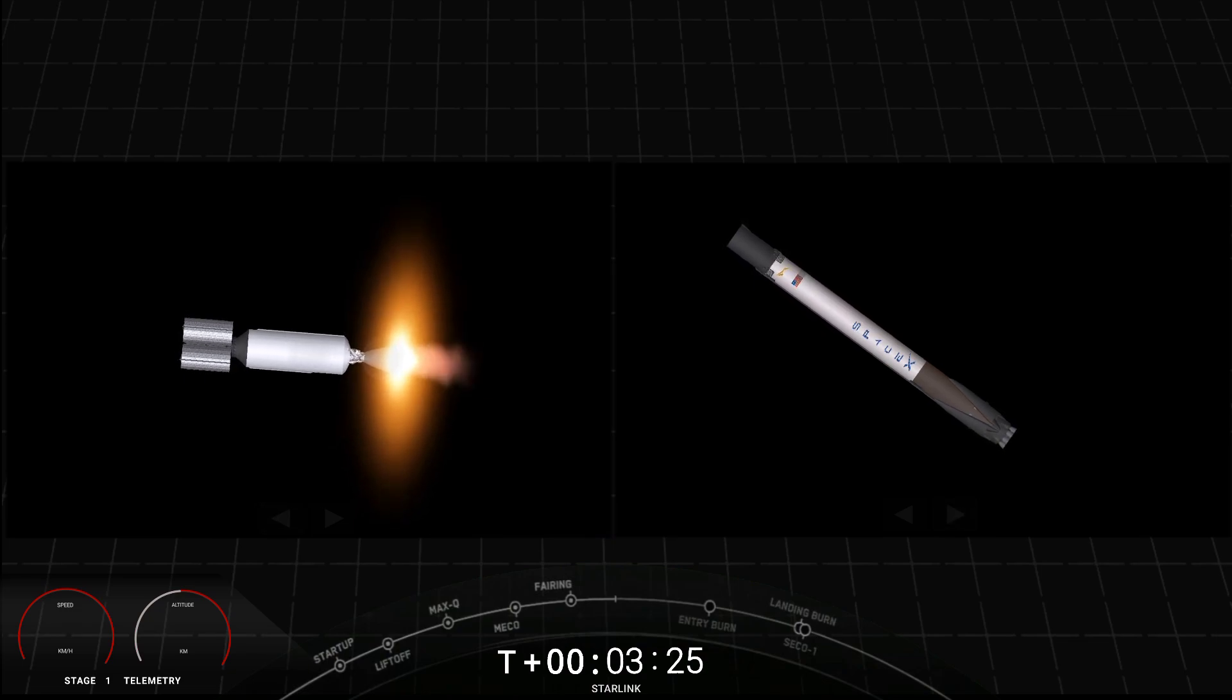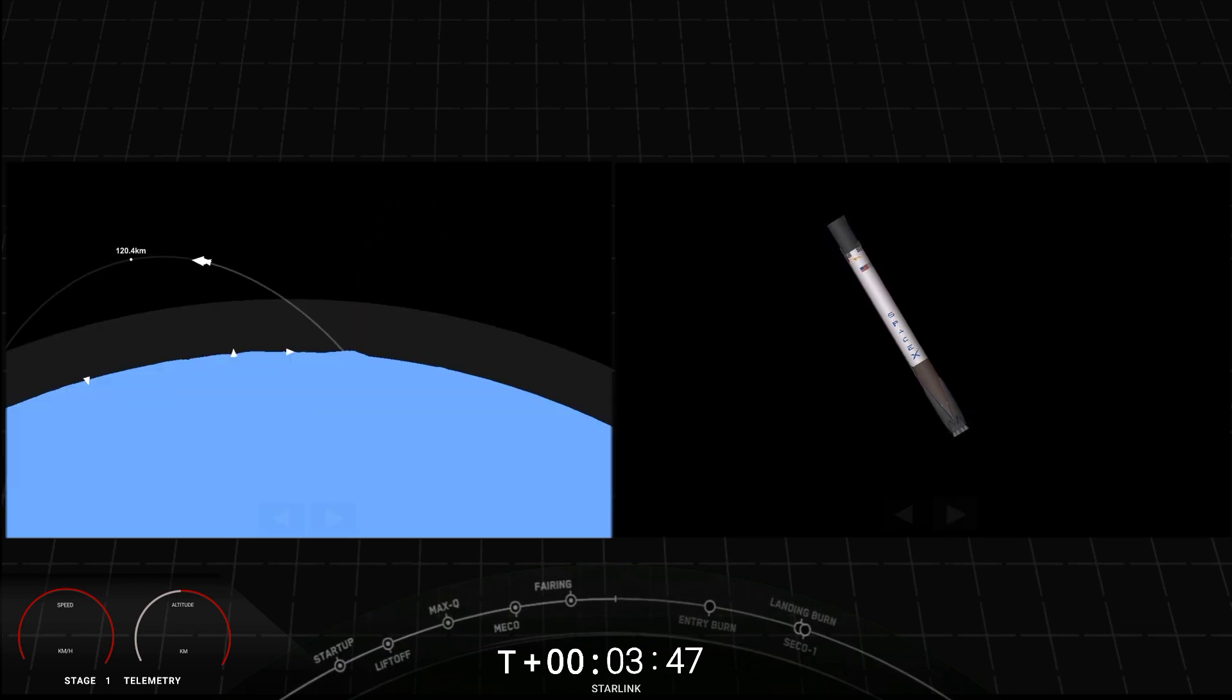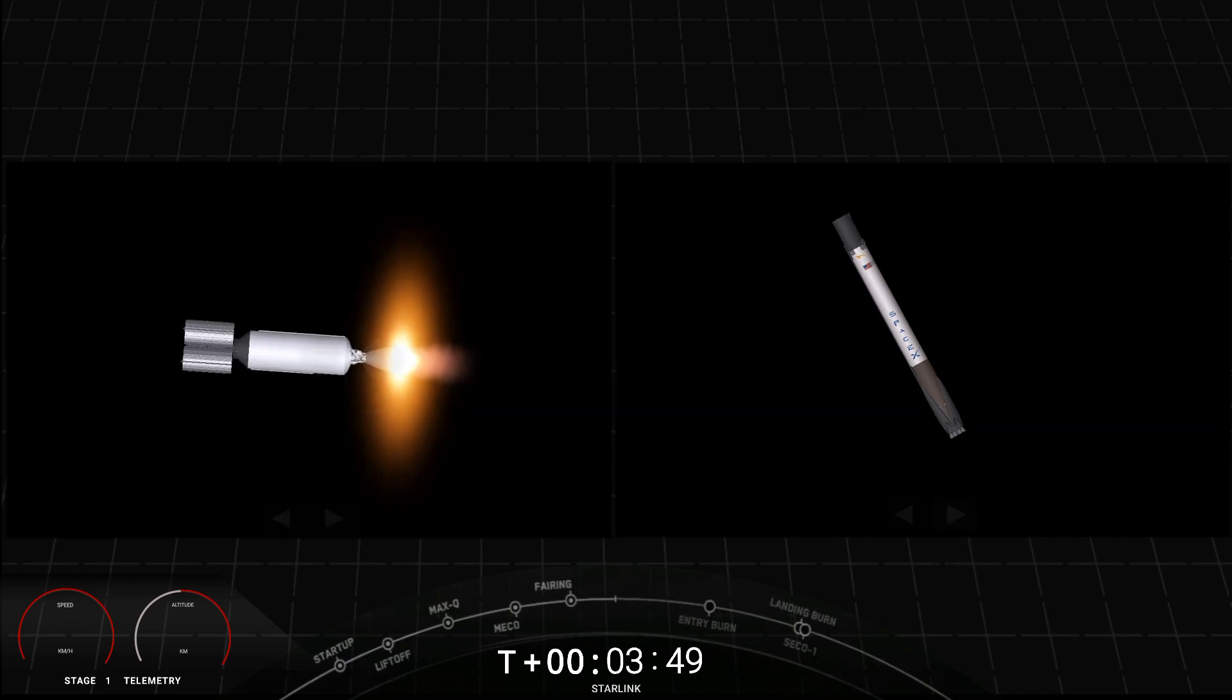We got some phenomenal footage of ascent. A couple of views on screen right now. On the left-hand side of your screen is the first stage, a view from the top looking down. It's heading back to our drone ship in the Pacific Ocean. On the right-hand side of the screen is a view of that Merlin vacuum engine glowing red hot, continuing to carry our stack of Starlink satellites to low-earth orbit.